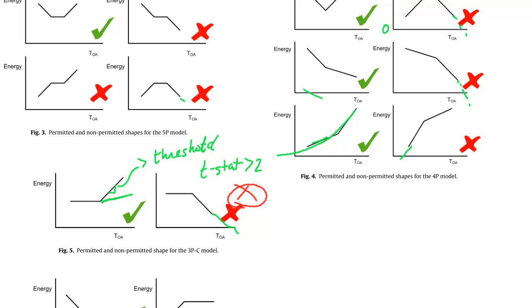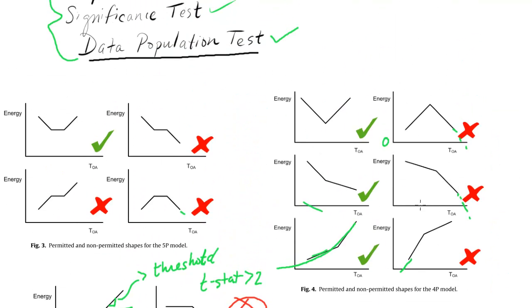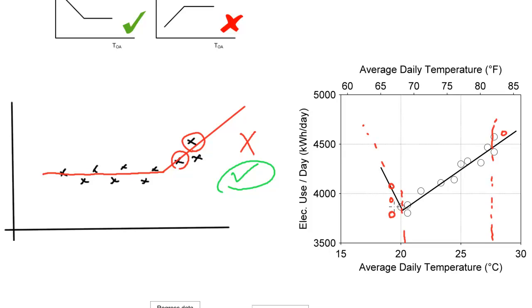And the final test was the data population test. So we were trying to not have problems like this where, yes, that model fit well, had the right shape, and both these slopes are plenty sloped enough. But this section here is troublesome. It is not realistic for if you had a temperature below 20 here. So the last test is we require at least 25% of the data points to be part of a sloped section.